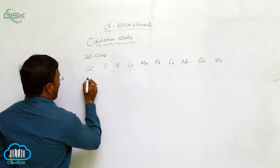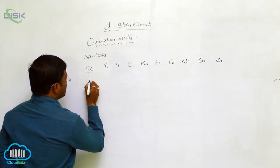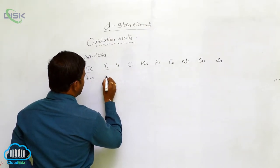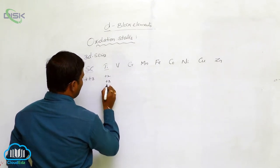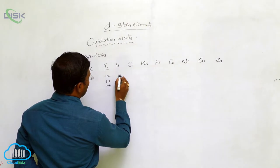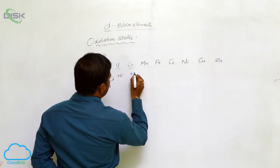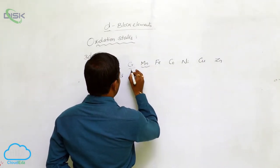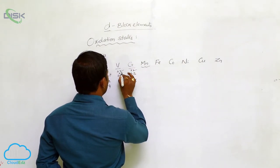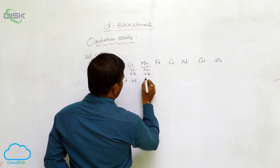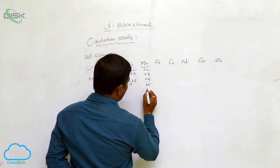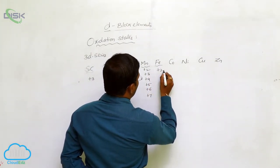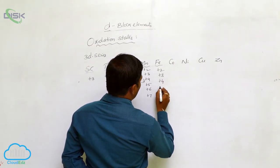The general oxidation state of scandium is +3. For titanium: +2, +3, +4. For vanadium: +5. For chromium: +3 and +6 are the most important oxidation states. For manganese, the common oxidation states are +2, +3, +4, +5, +6, and +7. For iron, the most probable oxidation states are +2, +3, +4, and +6.